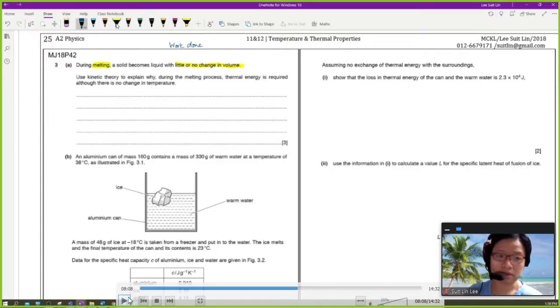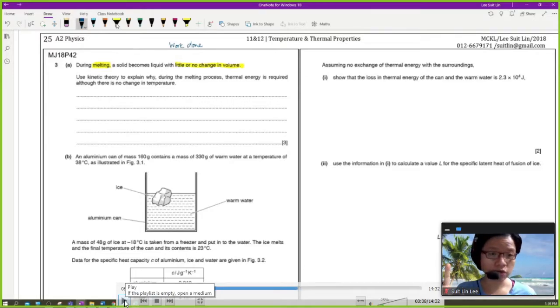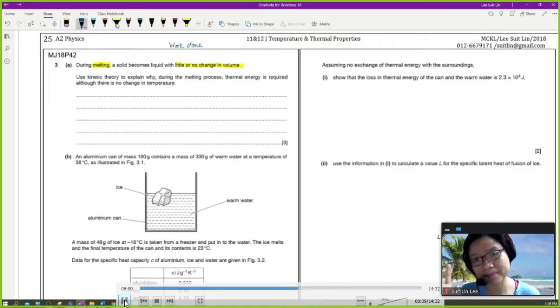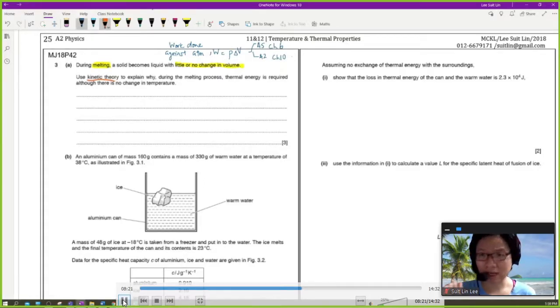So first we read the statement first. During melting, a solid becomes liquid with little to no change in volume. So if you have learned gases, and if you have not, then you will learn it very soon. When there's little or no change in volume, there's no work done on or by the gas. No work done on, and no work done by the gas. Because P delta V, work done is P delta V. So you learn this in AS chapter 6, you also learn it again in A2 chapter 10, ideal gases.